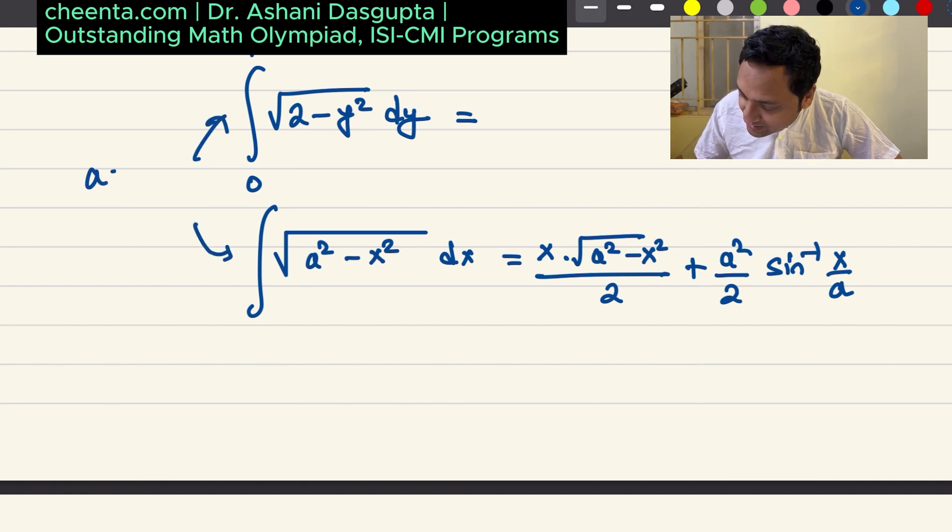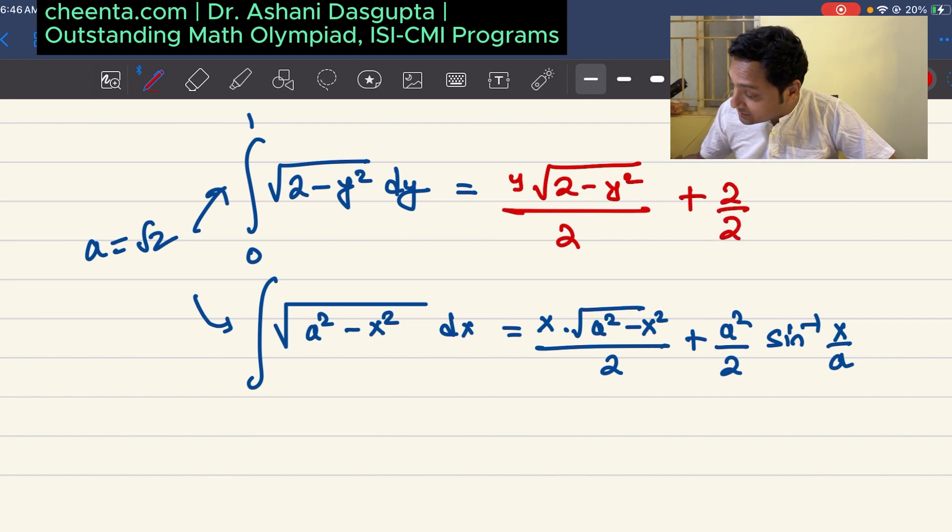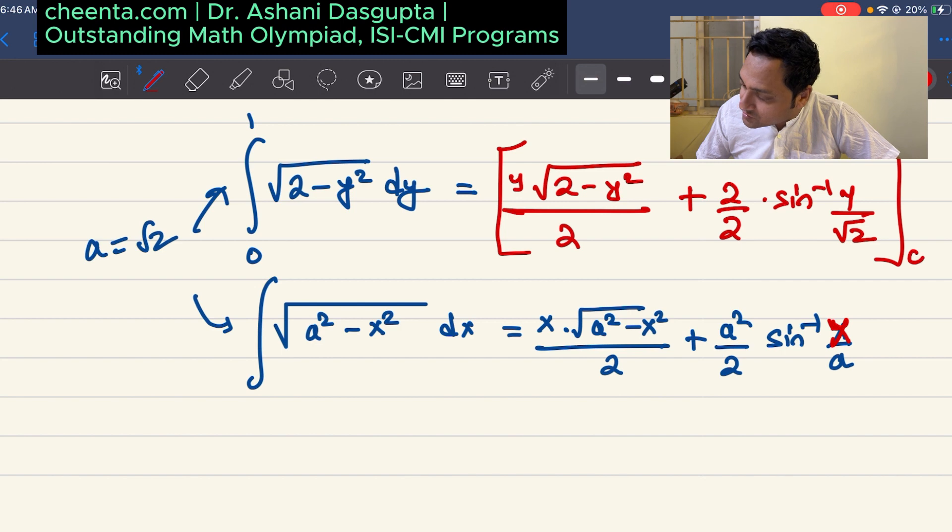But just bear with me for a moment, because this computation, getting your hands dirty is also important. So here a in this expression is square root of 2. Let me write this. So this is y times 2 minus y square by 2 plus, and a square is 2, times sin inverse y by square root of 2. This we want to do from 0 to 1. You want to compute the limits from 0 to 1.